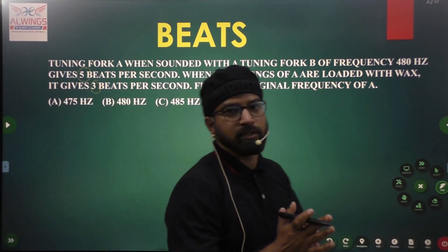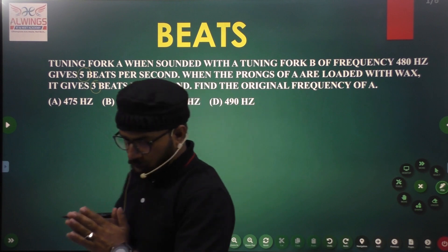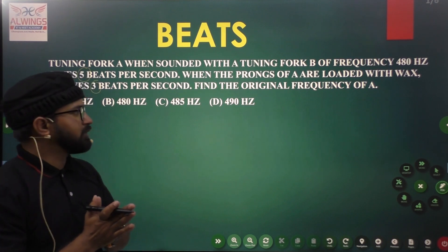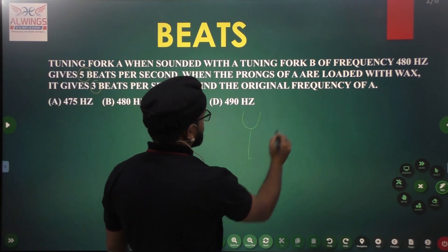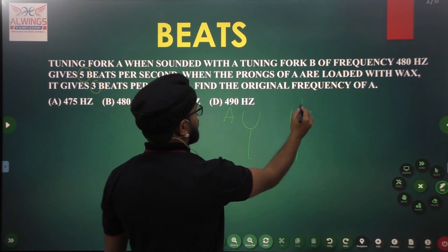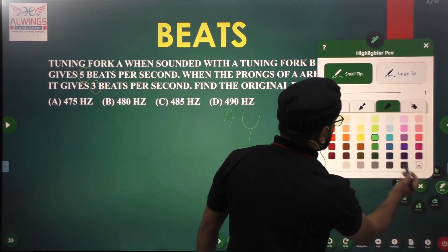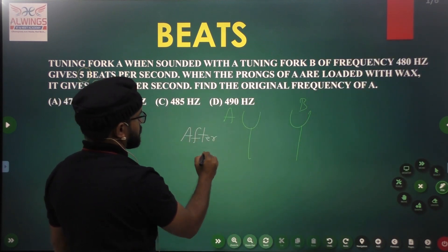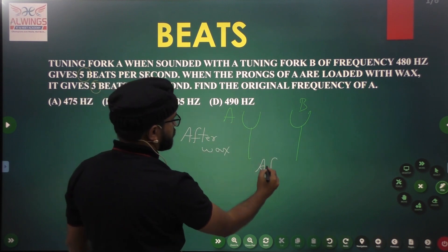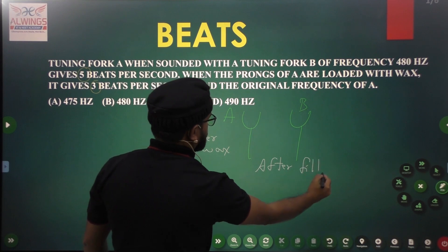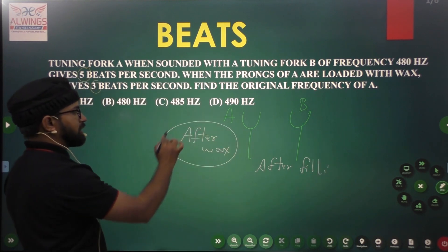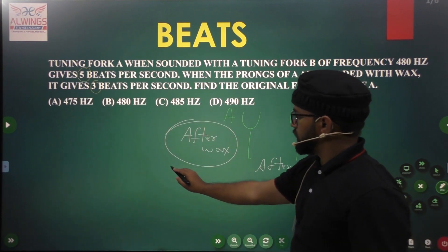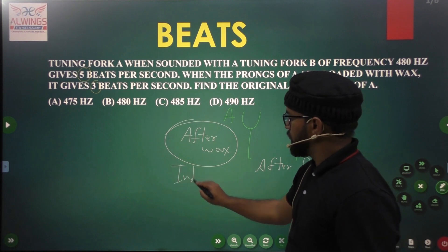There are 3 methods involved to solve this kind of problem. First, we try to understand what happens after waxing or after filing when we do it over the tuning forks. There will be two tuning forks — A and B. Always remember, whenever we do waxing over any individual tuning fork, its individual frequency will decrease.